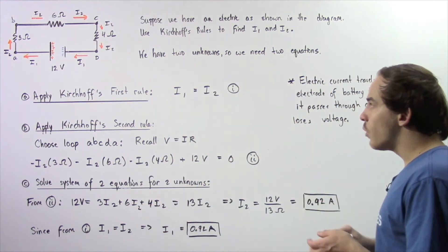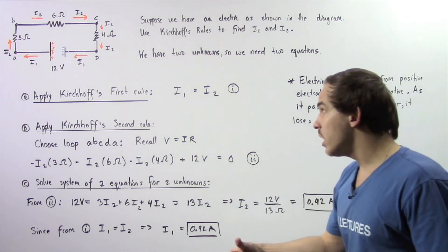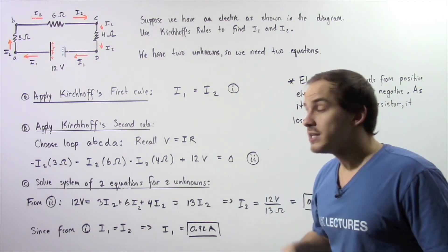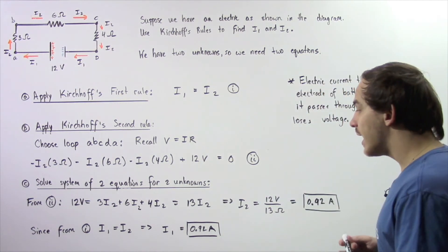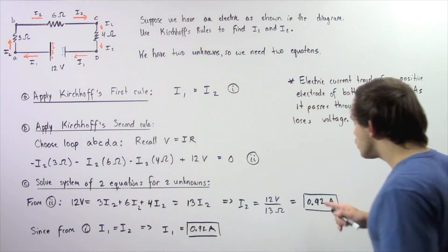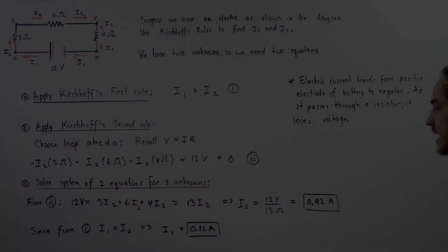Now going back to equation I, we know that I1 is equal to I2. So that implies I1 is also 0.92 amps.